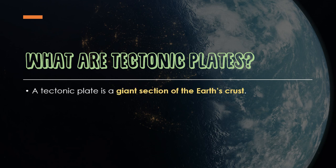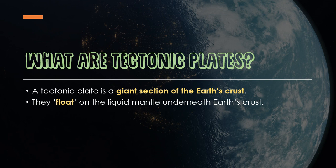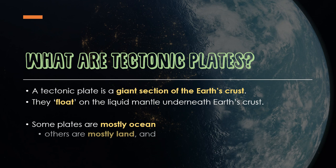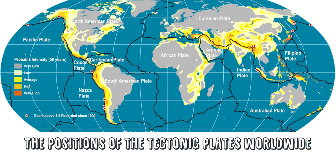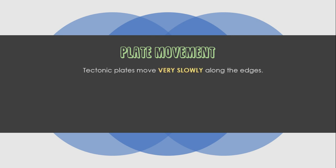A tectonic plate is a giant section of the earth's crust. They float on the liquid mantle underneath the earth's crust. Some plates are mostly ocean, others are mostly land, and others have both land and ocean on them. The map above shows the positions of the tectonic plates, showing how some plates are mostly ocean, mostly land, or both.